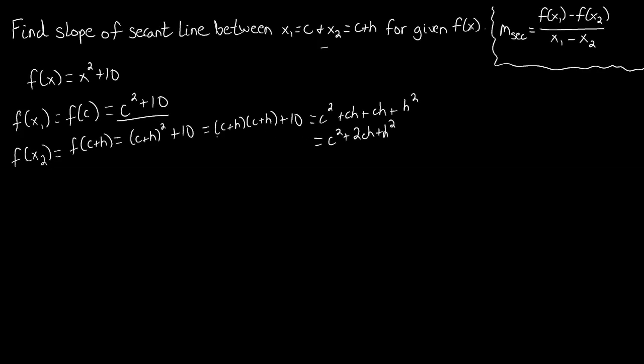So what we get is c squared plus 2ch plus h squared. This is what the product of our two binomials were, but we can't forget the plus 10 on the end. So f of c plus h returns this.